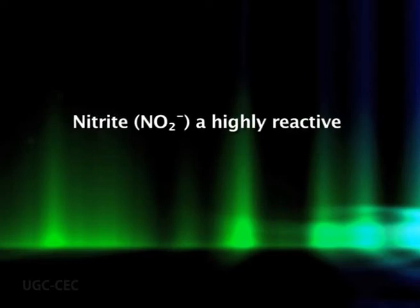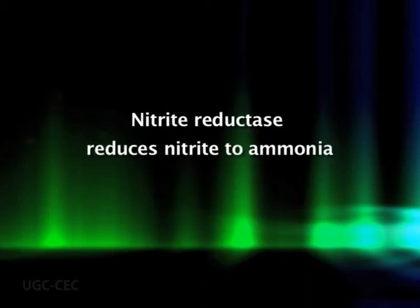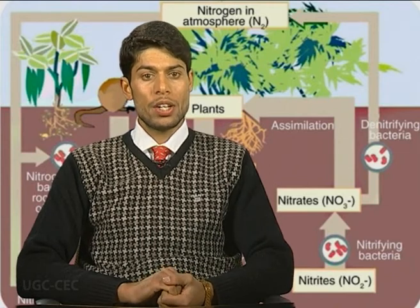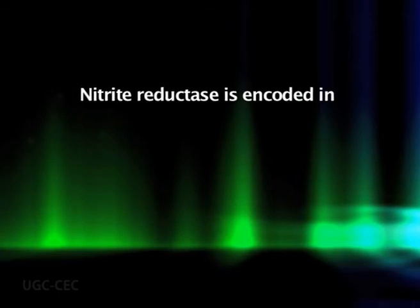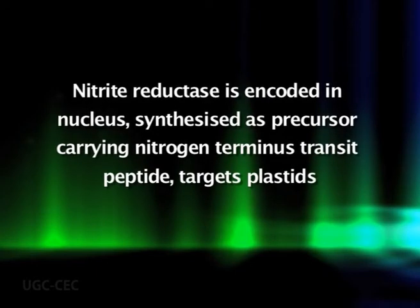Nitrite is a highly reactive and potentially toxic ion. Plant cells immediately transport the nitrite generated during nitrate reduction from the cytosol into chloroplasts in leaves and plastids in roots. In these organelles, the enzyme nitrite reductase reduces nitrite to ammonia. Chloroplasts and root plastids contain different forms of the enzyme, but both forms transfer electrons from ferredoxin to nitrite. Reduced ferredoxin derives from photosynthetic electron transport in chloroplasts, and from NADPH generated by the oxidative pentose phosphate pathway in non-green tissues. Nitrite reductase is encoded in the nucleus and synthesized as a precursor carrying an N-terminal transit peptide that targets it to the plastids.